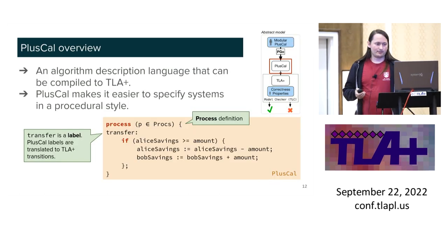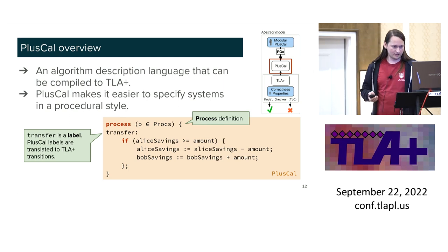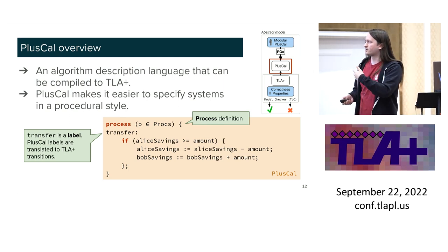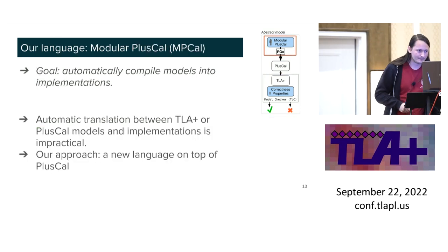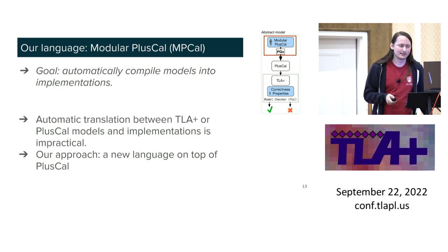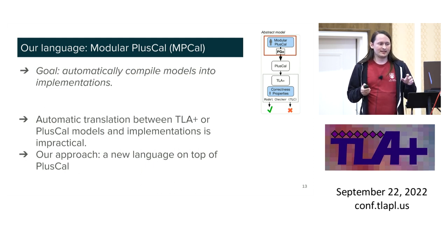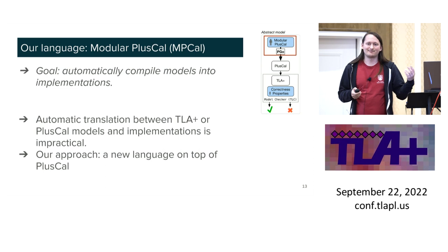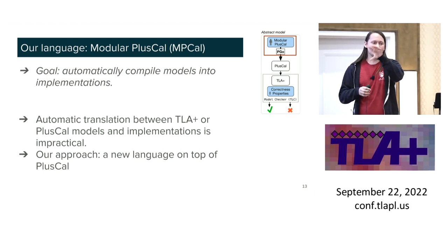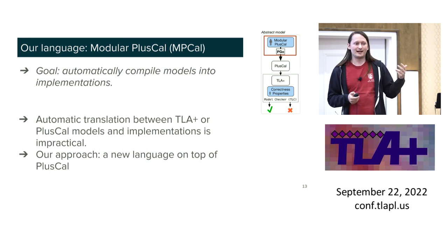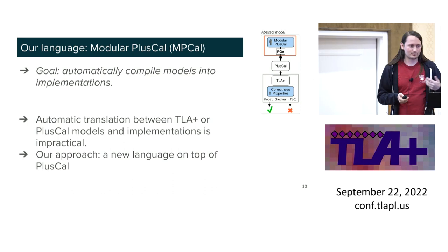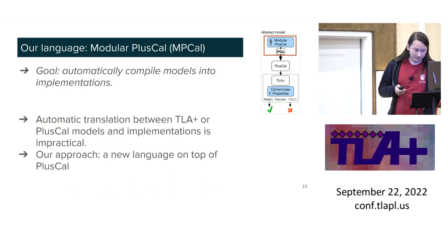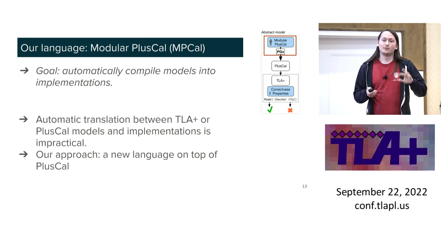Back to the PlusCal thing — the imperative features and the expressions are TLA+, and it can interact with surrounding TLA+ code. Our language is Modular PlusCal, which is not exactly PlusCal. Essentially, trying to automatically translate TLA+ and PlusCal directly is impractical at best. You get this kind of mix of things only the model checker should care about and actually important protocol code. Our approach is this new language that adds stuff mostly to PlusCal.